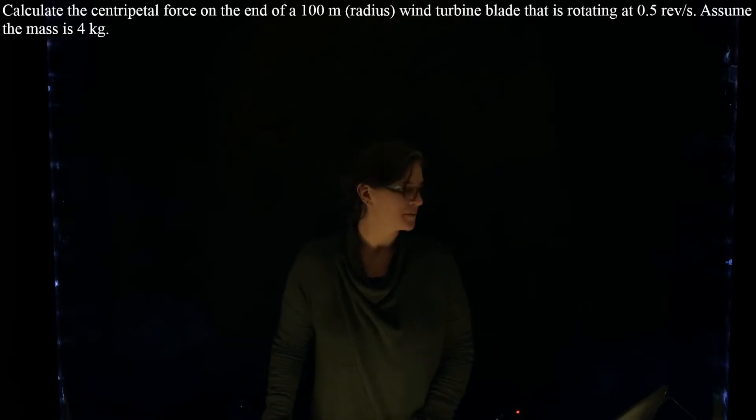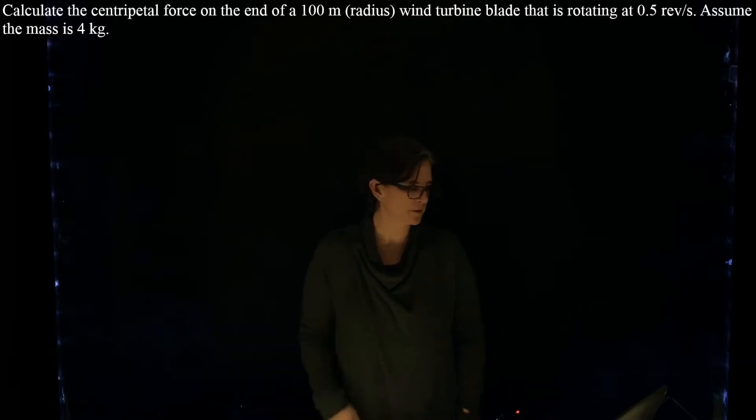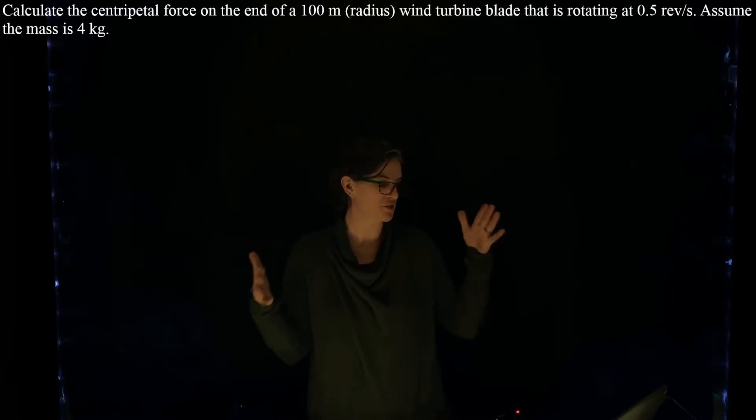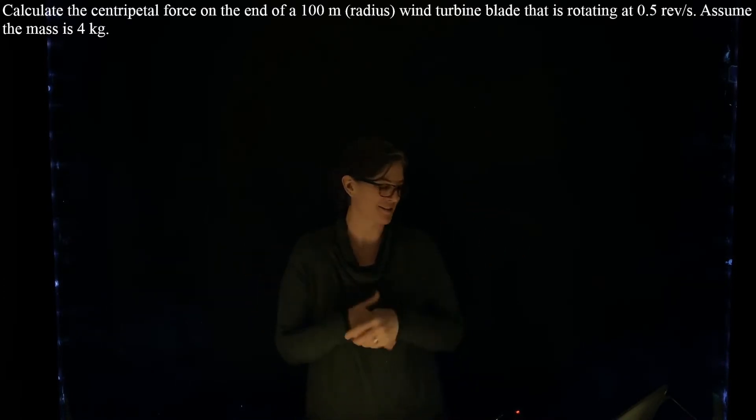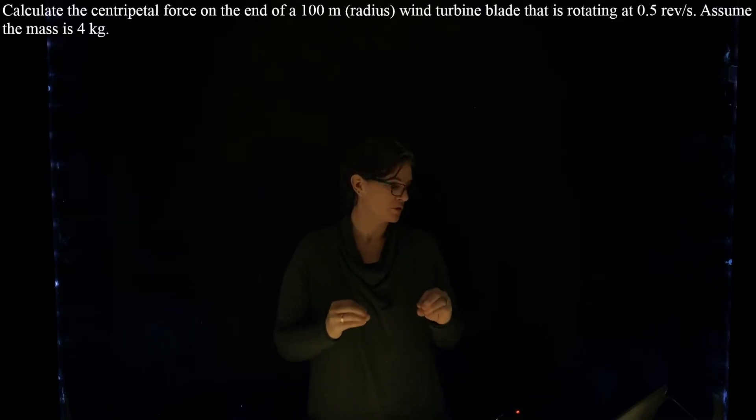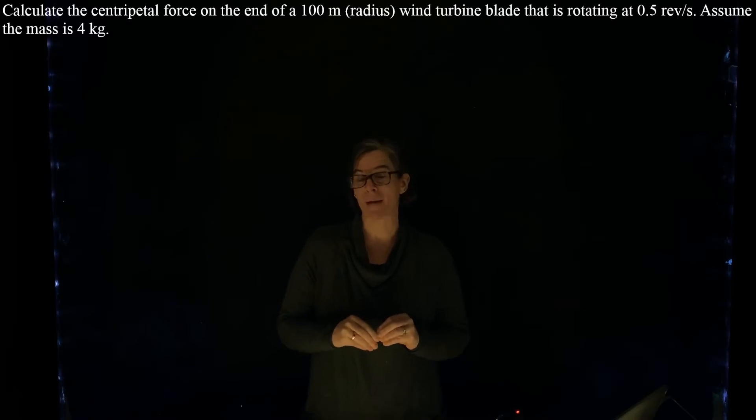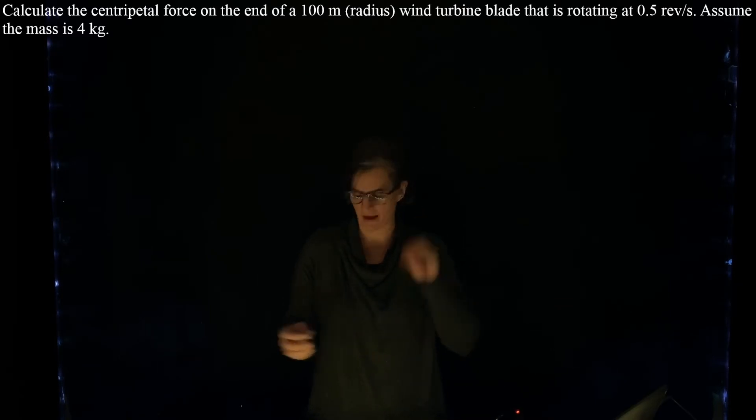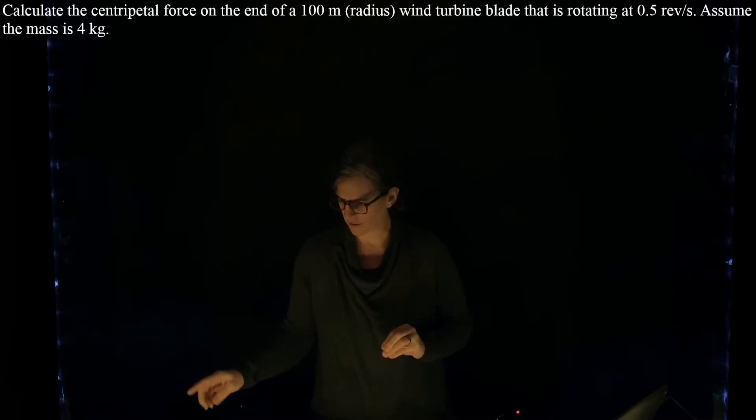All right, so this problem reads: calculate the centripetal force on the end of a 100 meter long wind turbine blade, so the radius is 100 meters, that's rotating at 0.5 revolutions per second. And we're going to assume the mass of that blade is 4 kilograms.